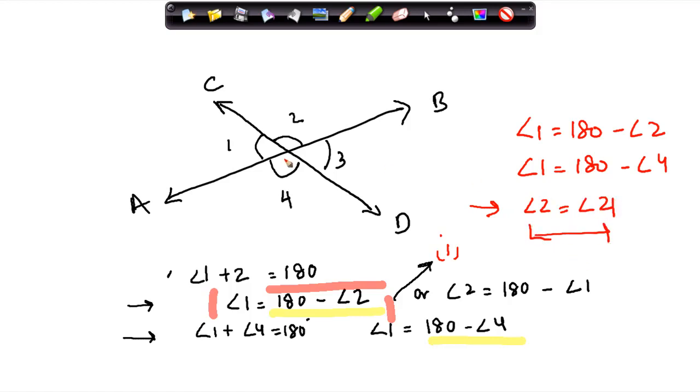So therefore, these two angles which are vertically opposite to each other are equal.